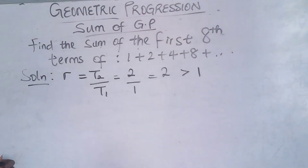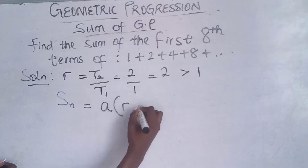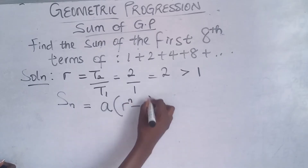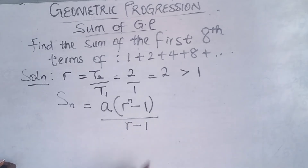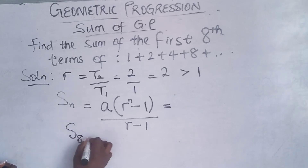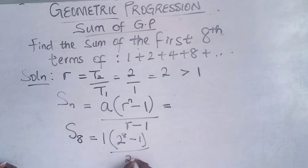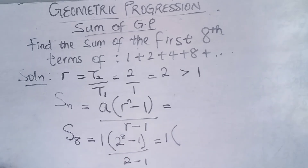Since r = 2, which is greater than 1, the formula we use is S = a(r^n − 1) / (r − 1). We want S8, so a = 1, r = 2, n = 8. Substituting: S8 = 1 × (2^8 − 1) / (2 − 1). Now we need to calculate 2^8, which means 2 multiplied by itself 8 times.